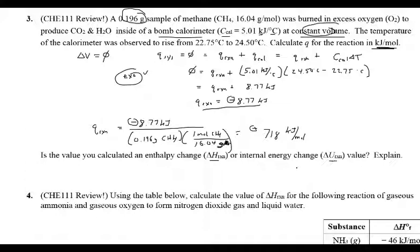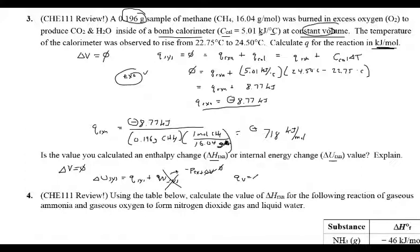There's a nice conceptual question here. This is a bomb calorimeter, so delta V equals zero. Thinking about delta U of the system: from the first law, it equals Q of the system plus work of the system. Work can be expressed as negative P_external times delta V. If delta V is zero, that kills the work term. So the Q you measure at constant volume equals delta U. That's different from what we measured in lab — we measured Q at constant pressure, and when you do that, that's delta H.